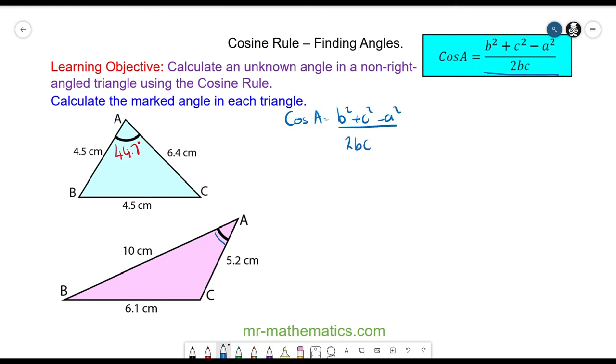Okay so we're going to use this formula. We'll substitute in B which is 5.2 and C which is 10 and A which is 6.1. So the cosine of angle A is equal to 5.2 squared plus 10 squared minus 6.1 squared over 2 times 5.2 times 10.